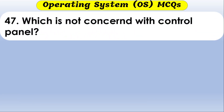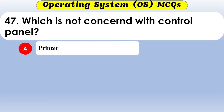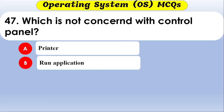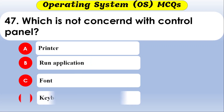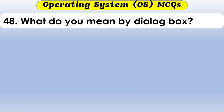Which of the following is not found in the Control Panel? The options are printer, run application, fonts, and keyboard. The correct option is run application — it is not in the Control Panel.